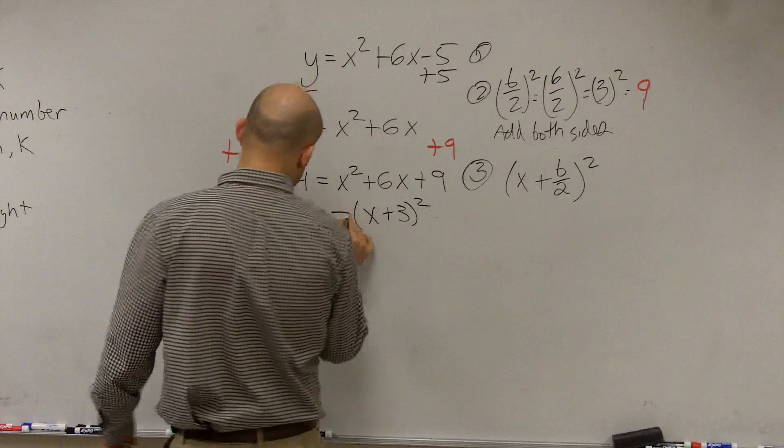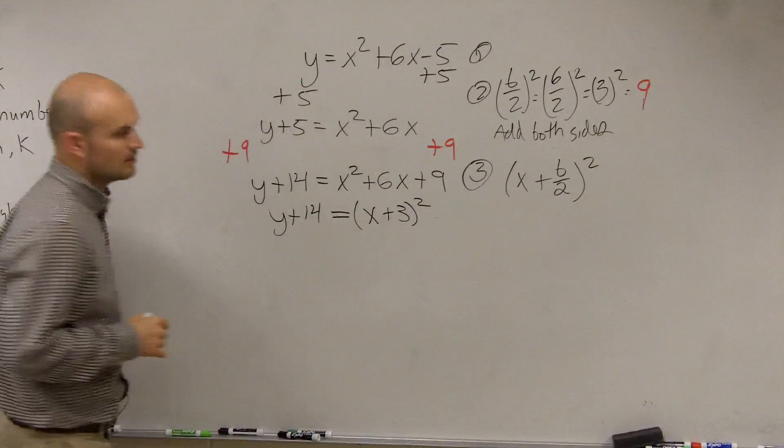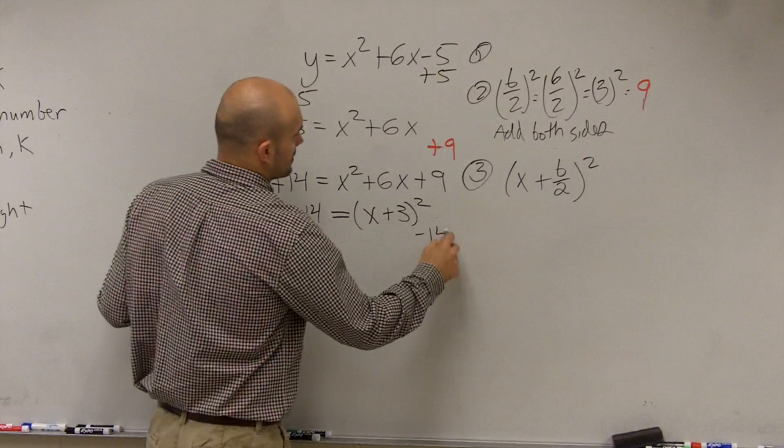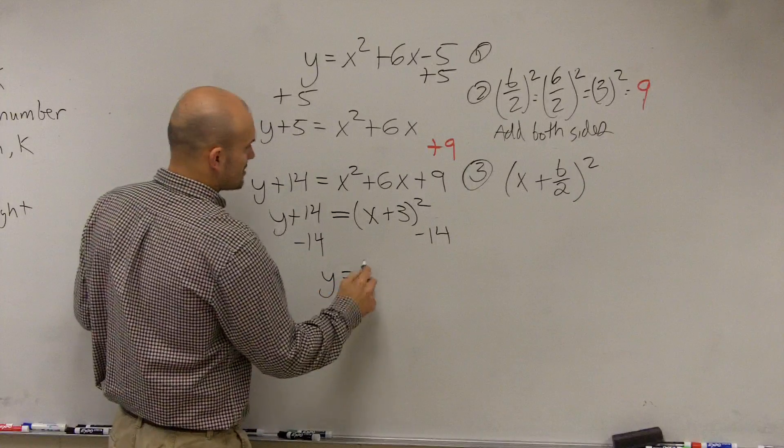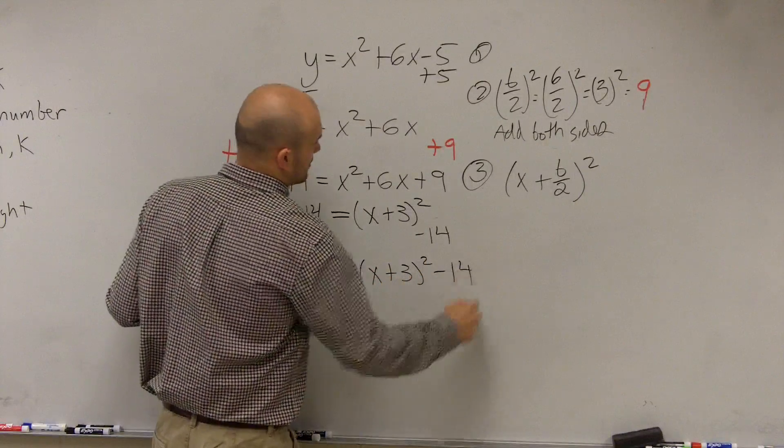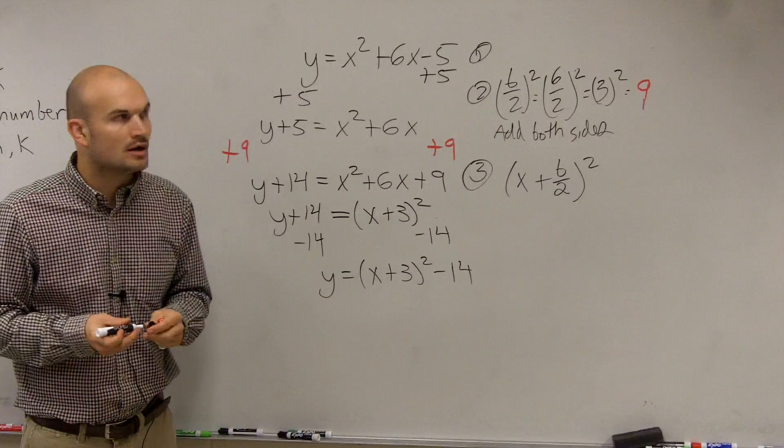And then that equals y plus 14. So now, to get solved for y, we're going to subtract the 14. And we have y equals x plus 3 squared minus 14. And that is what we call vertex form of a parabola.